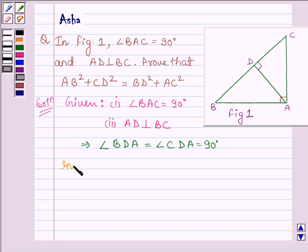Now, let us consider triangle ADC. This implies in this triangle we have AC square is equal to AD square plus DC square. This is by Pythagoras theorem.